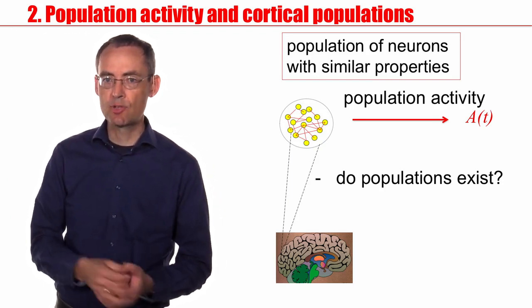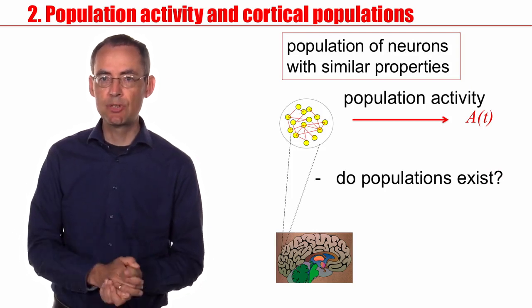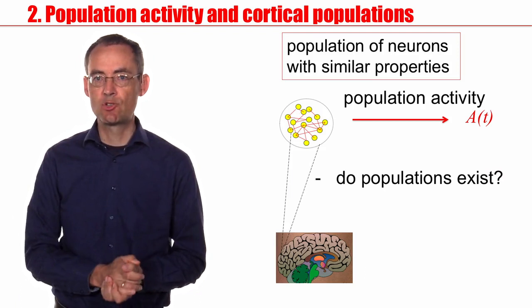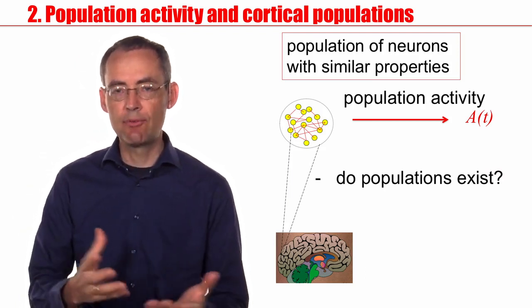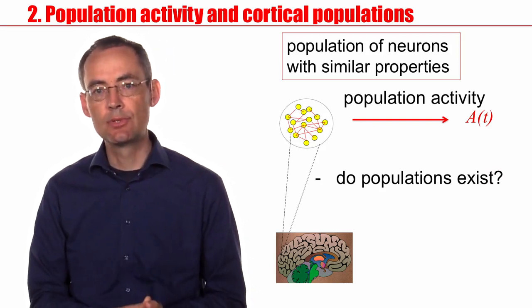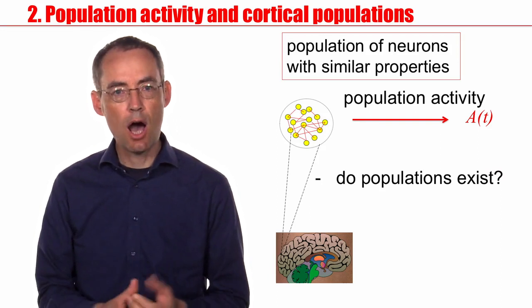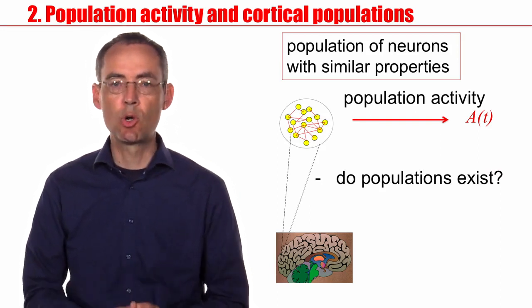But are there such populations? Can we think of really finding neurons that have similar properties, that possibly sit next to each other, that we can do a spatial average that makes sense? Yes, I will argue that columns of orientation-selective neurons in visual cortex are good candidates for such neural populations.